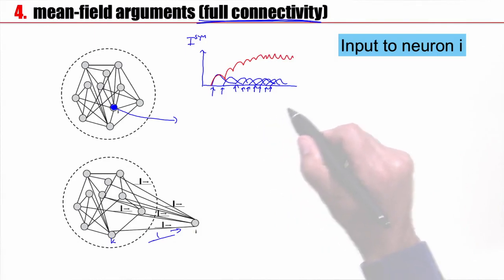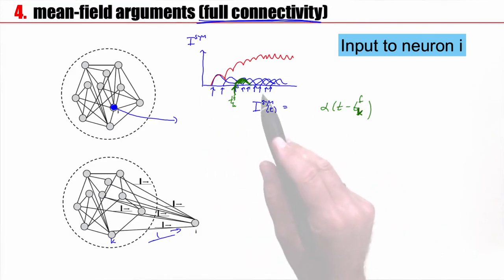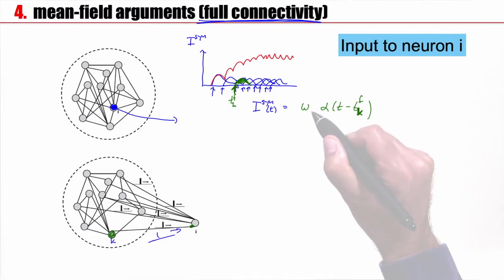Let's write this down. My total synaptic input coming from the network at time t is the sum over all these little pulses. One of these little pulses, the spike of neuron k with firing time t_k^f, causes this response, which I call alpha of t minus t_k^f. Each input comes with a certain weight, w_ik, the weight from neuron k onto neuron i. There are many of these spikes from different neurons k and different spike times. This is my total synaptic input coming from the population of neurons.